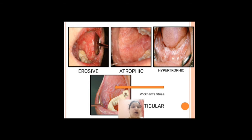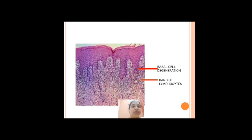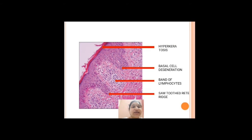Histologically, as mentioned, there will be degeneration of the basal cell layer. The epithelium shows hyperkeratosis, acanthosis of the spinous layer, and degeneration of the basal cell layer. Those degenerated cells are called civatte bodies, hyaline bodies, or cytoid bodies. This leads to cleft-like spaces called Max-Joseph spaces. Beneath the epithelium, there is a sub-epithelial lymphocytic infiltrate, appearing as a blue band. The rete ridges show a saw-tooth pattern.